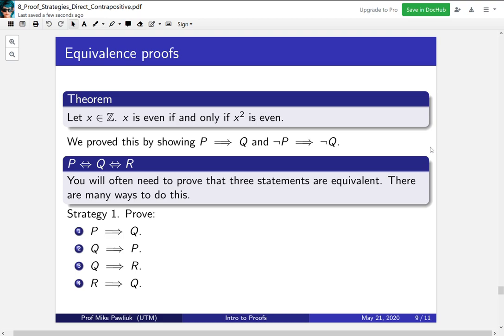There's actually a simpler way to do this though. A different strategy to prove that all three are equivalent are to prove that you have P implies Q, Q implies R, and R implies P. You should check on your own that you can get from any of the three statements to any of the other three statements by combining these three implications.